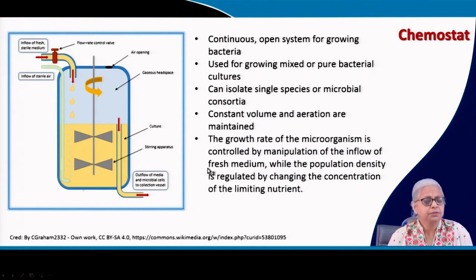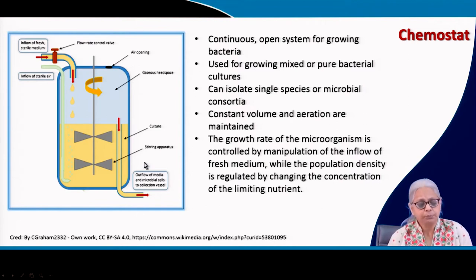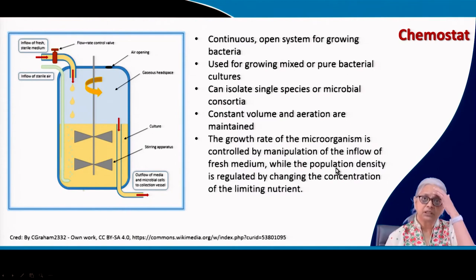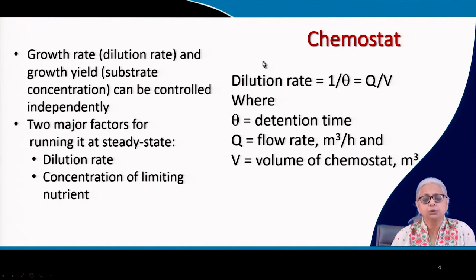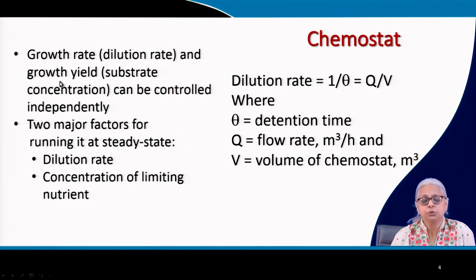The growth rate of the microorganisms can be manipulated by manipulating the flow rate coming into the reactor. You can regulate the population of cells within the reactor by changing the concentration of the limiting nutrient, shown by the letter S, which stands for the growth limiting substrate. Before we come to the derivation, let us note a few other points. The growth rate is related to the dilution rate, and the growth yield is related to the substrate concentration. You can control these parameters independently using the dilution rate and the concentration of the substrate.